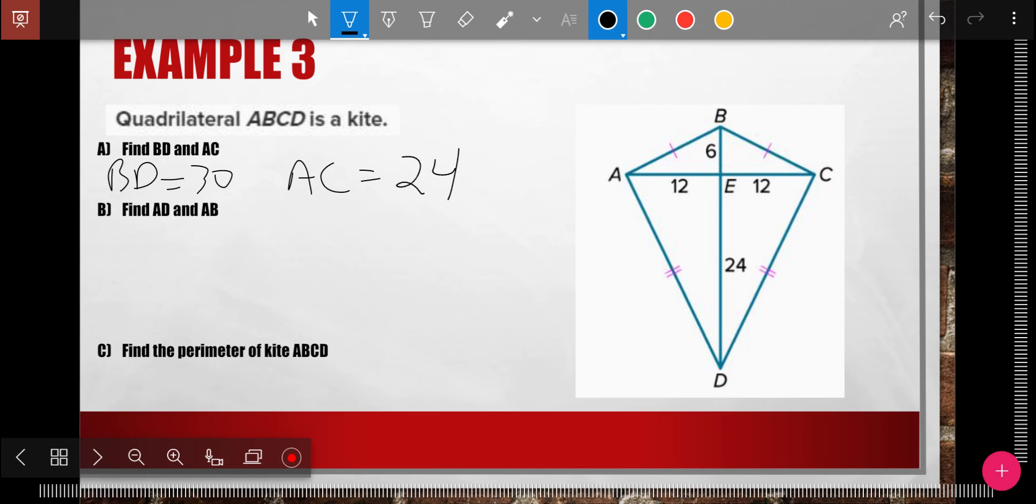And now let's find AD. AD is going to be right here, which is part of this right triangle. Now how do I know it's a right triangle? Because it's a kite, the diagonals are perpendicular. And so I use the fact that it's a right triangle to use Pythagorean theorem. A squared plus B squared equals C squared.